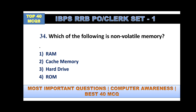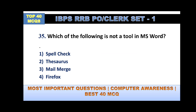Which of the following is non-volatile memory? There are two types of memory: volatile and non-volatile. RAM comes under volatile memory, while hard drive comes under non-volatile memory.